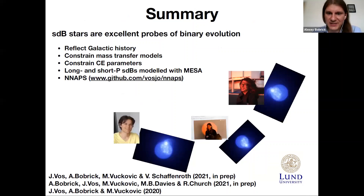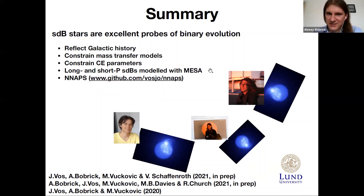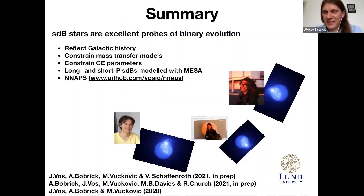In summary, subdwarf B-stars are excellent probes of binary stellar evolution, reflect galactic chemical history, constrain mass transfer models in red giant mass transfer, and constrain common envelope parameters. In this study, we modeled long- and short-period subdwarf B-stars with MESA. There is also the very useful NAPS tool, available on GitHub, which can efficiently run many systems sampled between MESA runs.